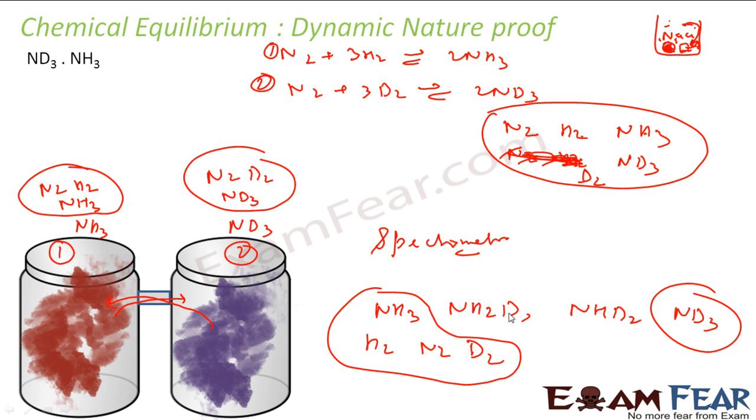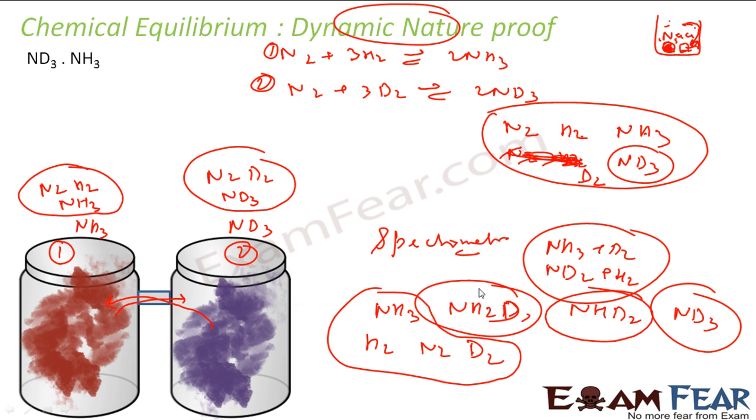How NH2D came, how NHD2 came? Because this is dynamic. Even if it reached the equilibrium, it was dynamic, it keeps reacting. NH3 reacted with D2 or ND2 reacted with H2. All these reactions keep happening and that's why we got these two also. Using mass spectrometer, chemistry founders found that it proves that the equilibrium is dynamic.